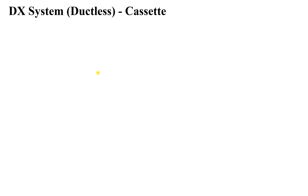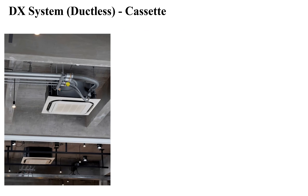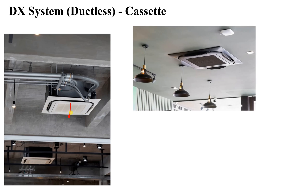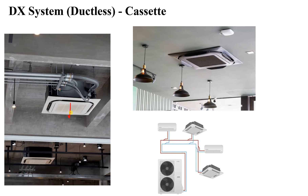There is also a type called the cassette. The cassette unit looks like this and provides cold air to the system. It is also connected to an outdoor unit, and one outdoor unit can serve two different indoor cassette units. The exact configuration depends on the design of the mechanical engineer.